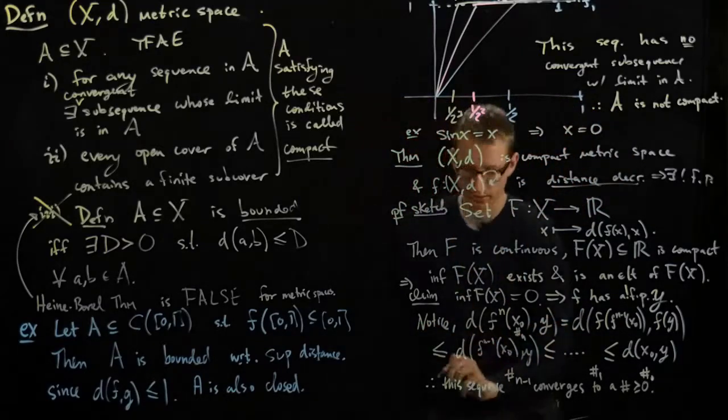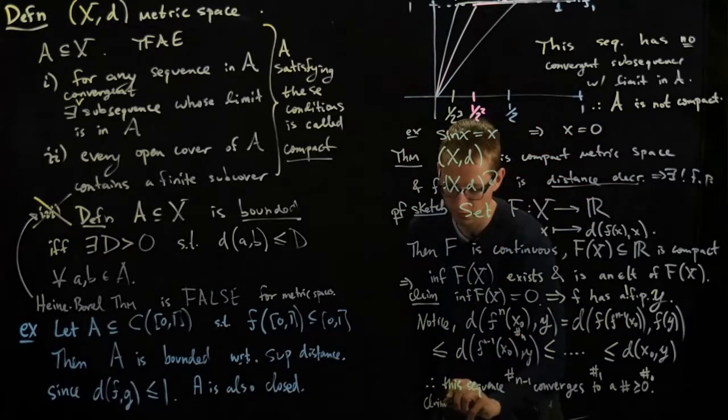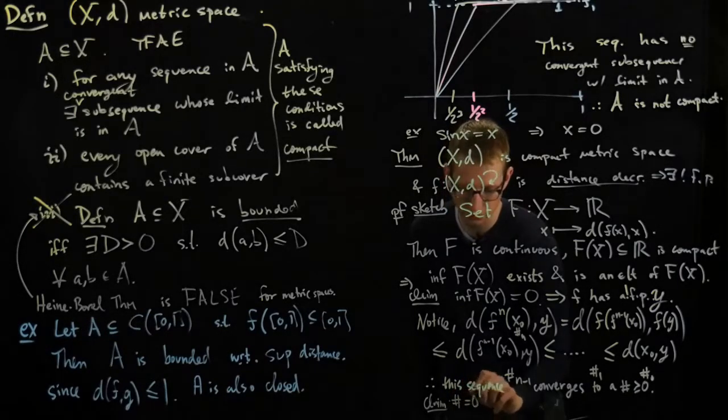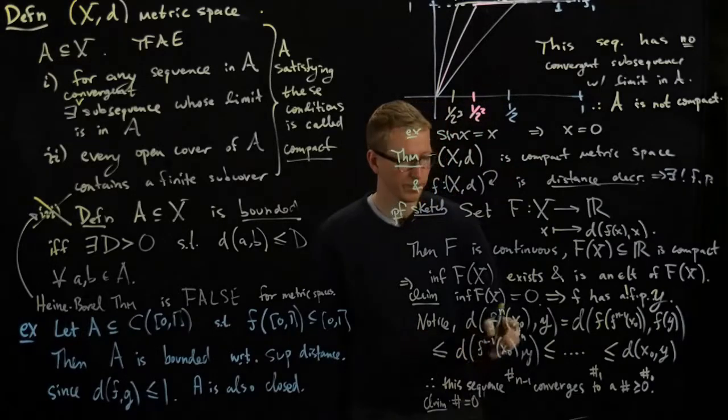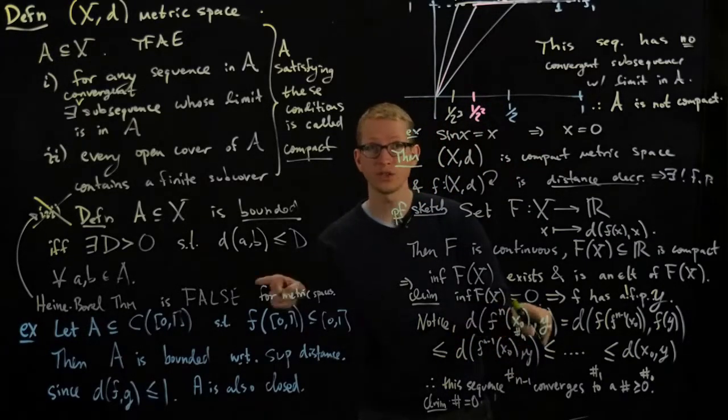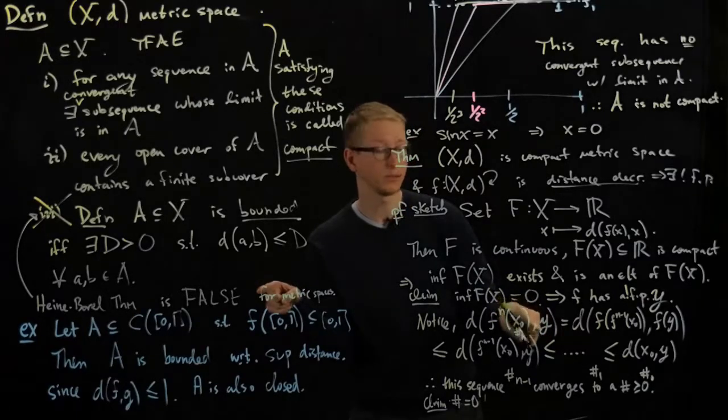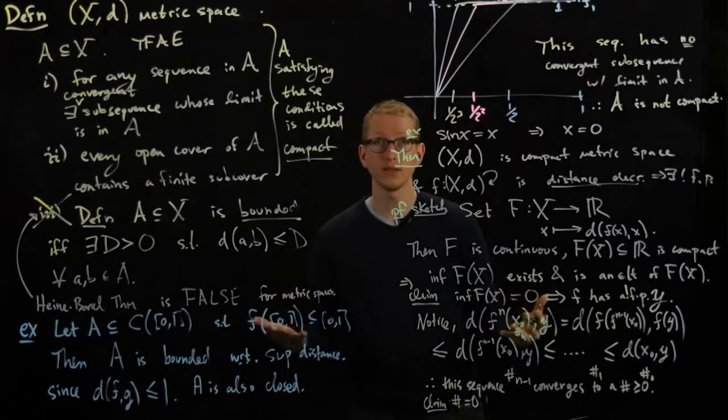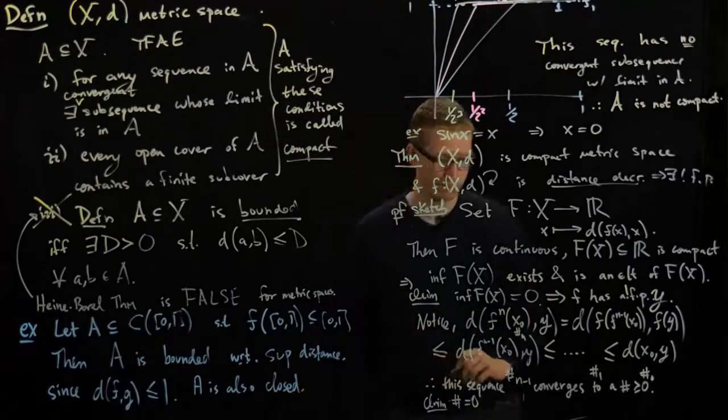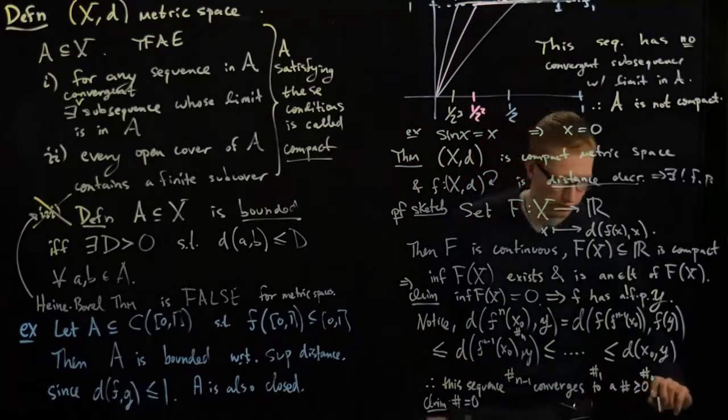In fact, you can show that this number equals zero, and what that means is that the distance between the nth iterates eventually get infinitesimally close to y, which exactly means that that sequence converges to y as well. So that actually concludes the proof.